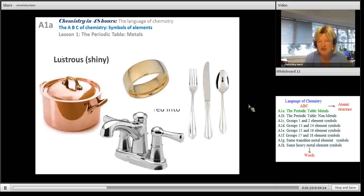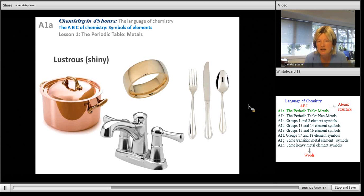First of all they are lustrous or shiny, so they are normally a shiny grey. But there are two metals that have a different colour: copper which is a reddish brown, and gold as shown in the gold ring over there.